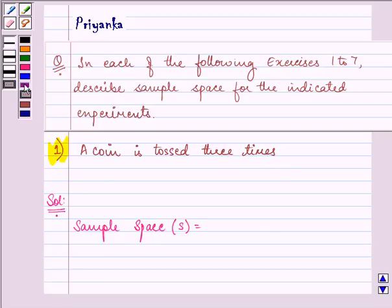Now, we know that when we toss a coin, there is a possibility that we can either get head or tail.